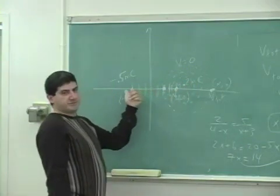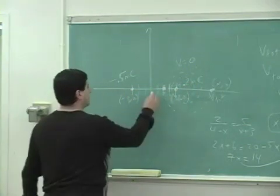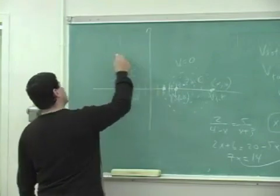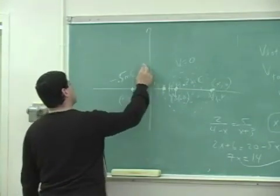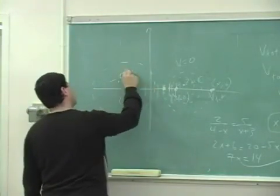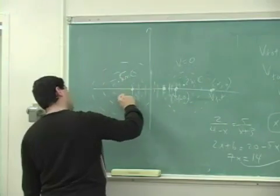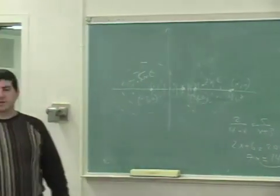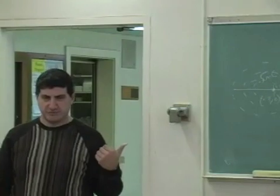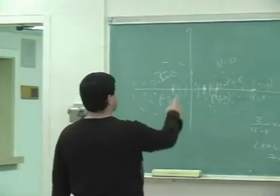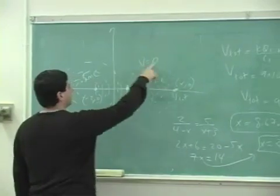And then as you go that way, what's going to happen? You're going to have ellipses like that. And what's going to happen there? You're going to get more negative. So there's going to be no other place where the potential is 0. The potential is 0 only along this ellipse.